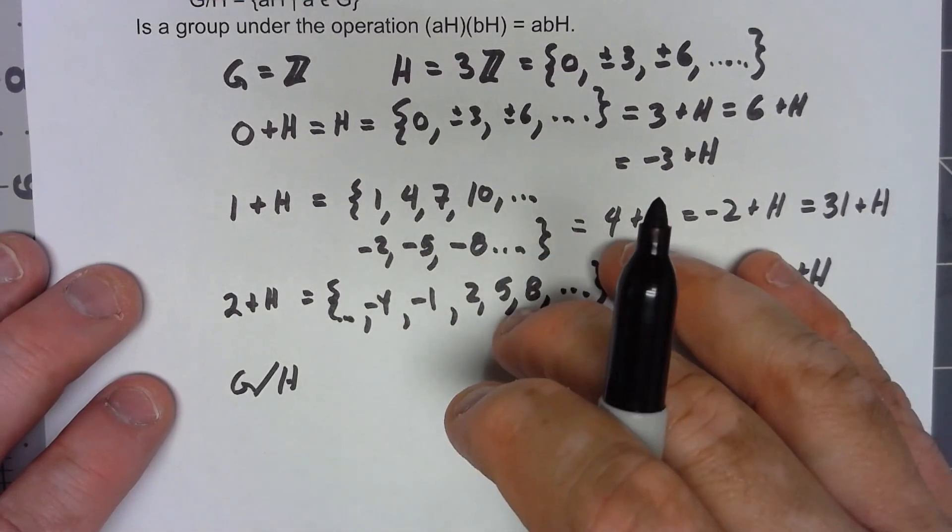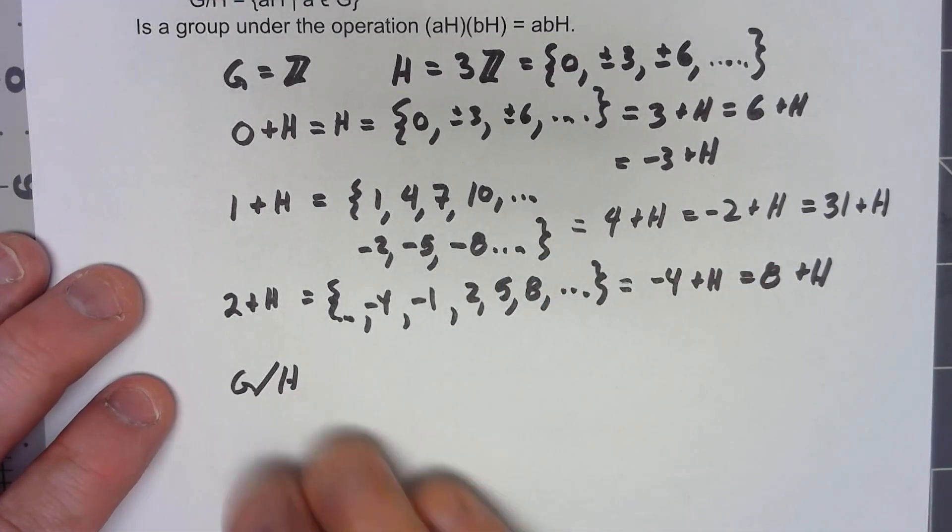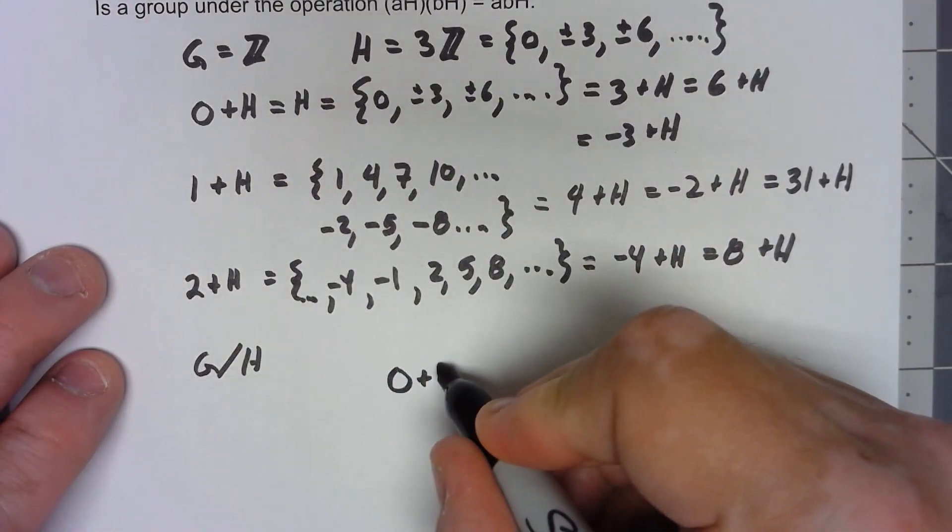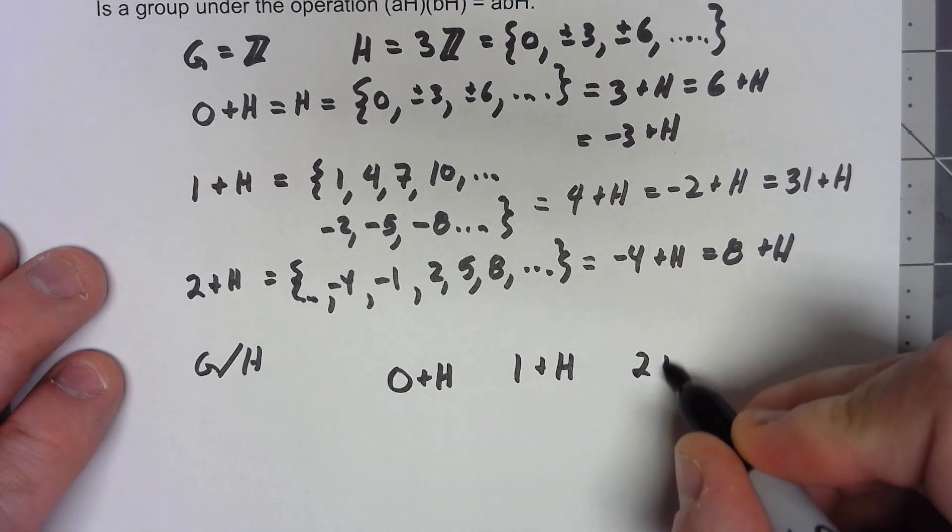Because it only has 3 elements, it's easy to construct a Cayley table for this group. So we have 0+H, 1+H, 2+H.